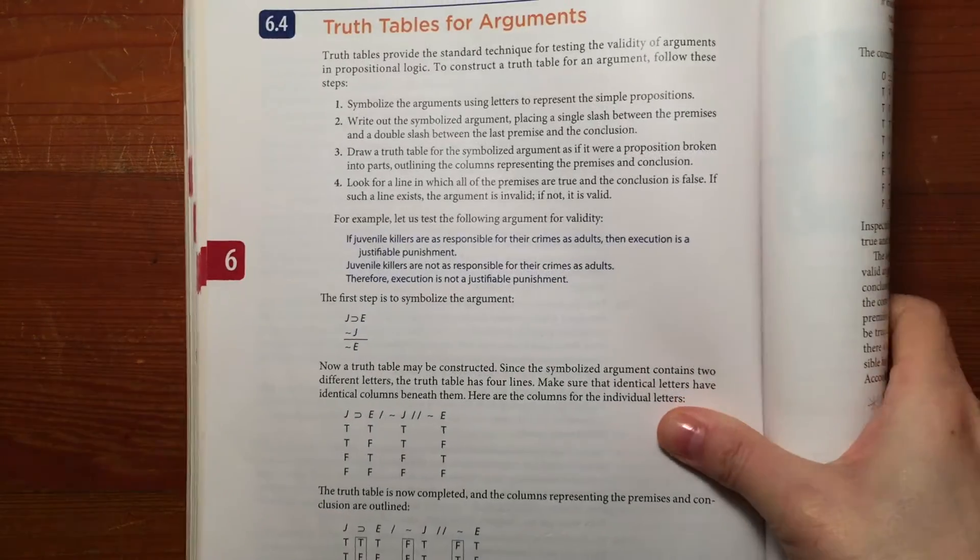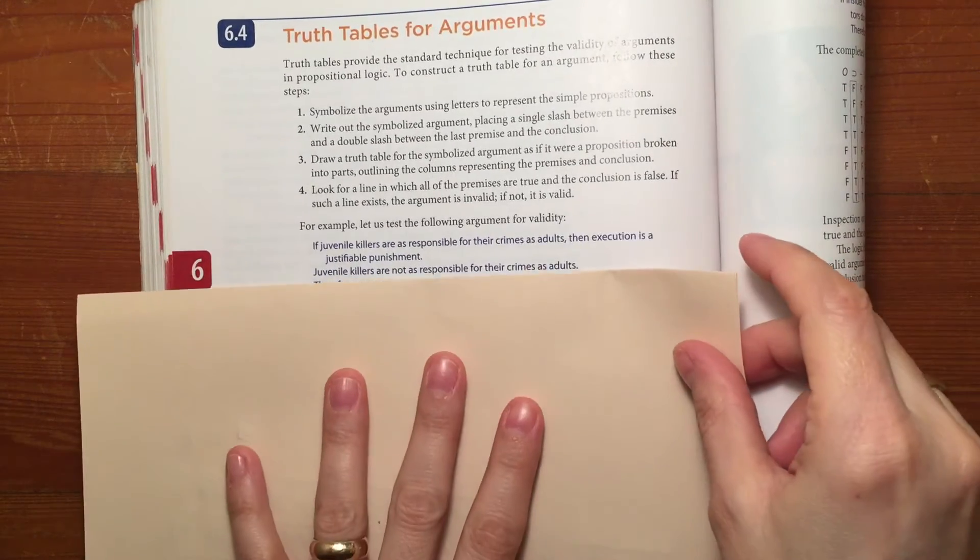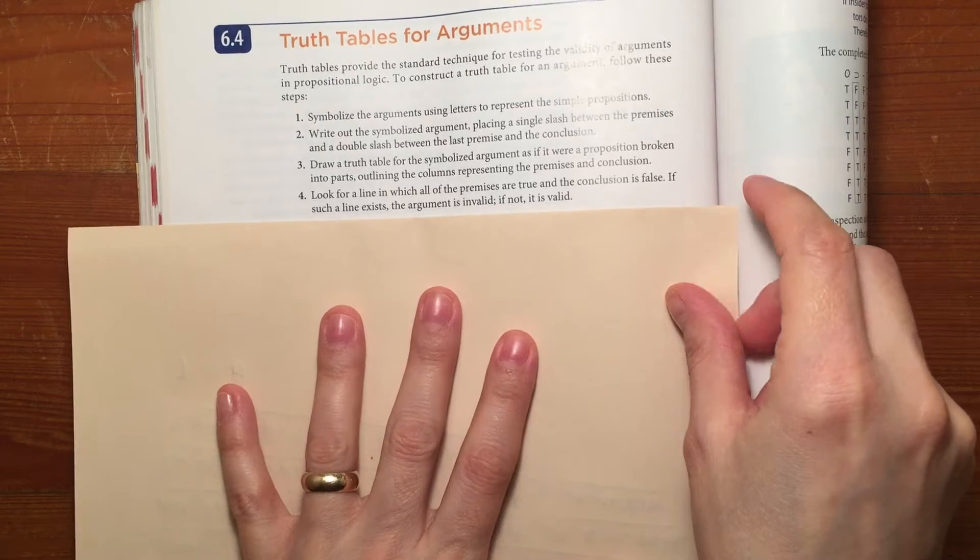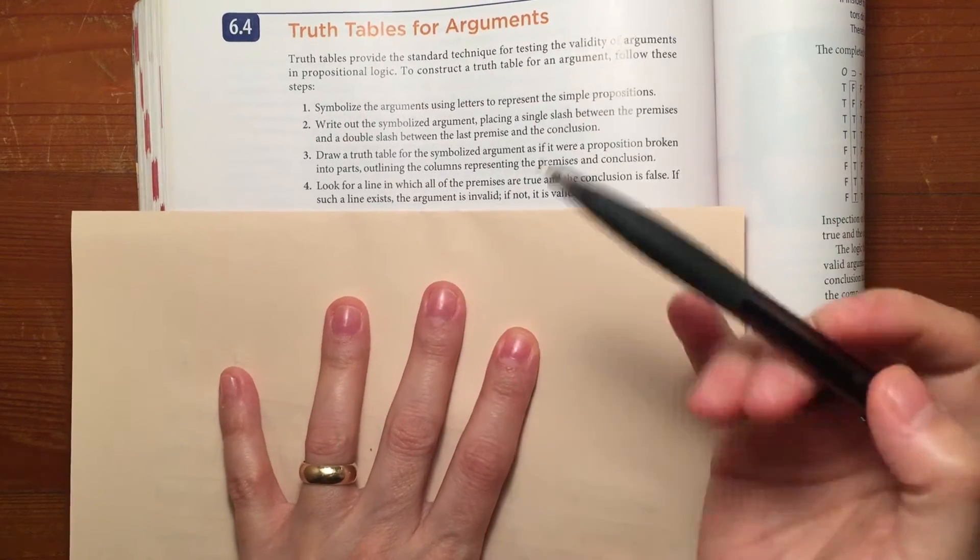Now that you've learned how to create truth tables for longer propositions, it's time for our final lessons which involve truth tables for arguments. You can take a look at section 6.4 page 344. That's where we'll begin. We're going to begin with the rules for truth tables, and I'll just show them to you in your textbook.